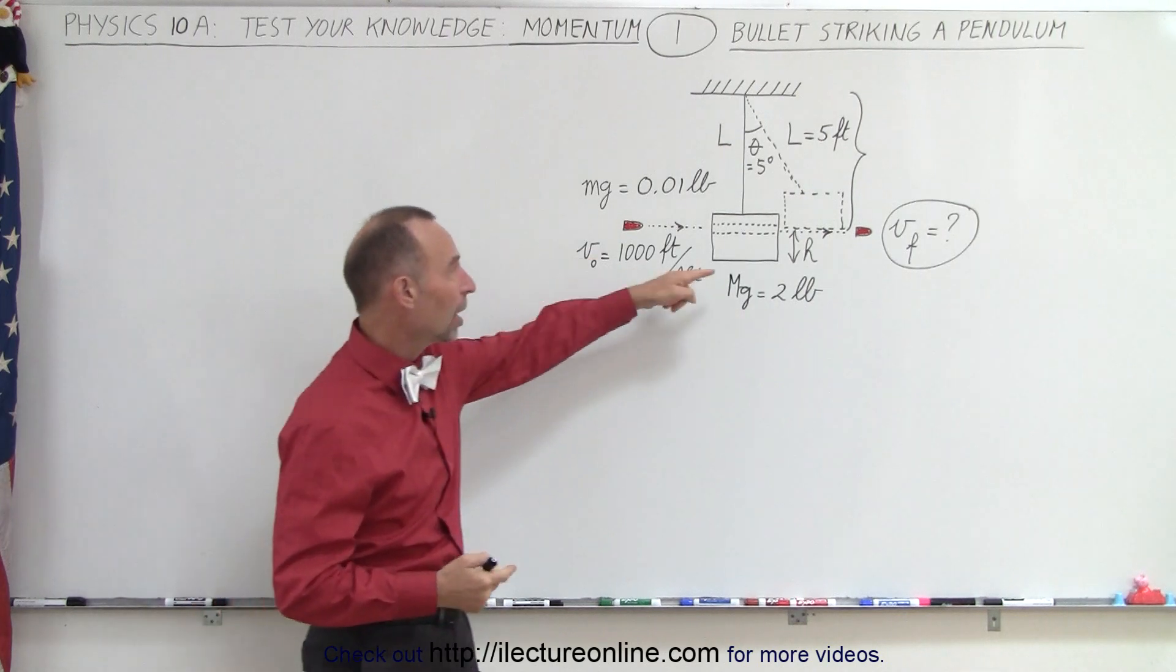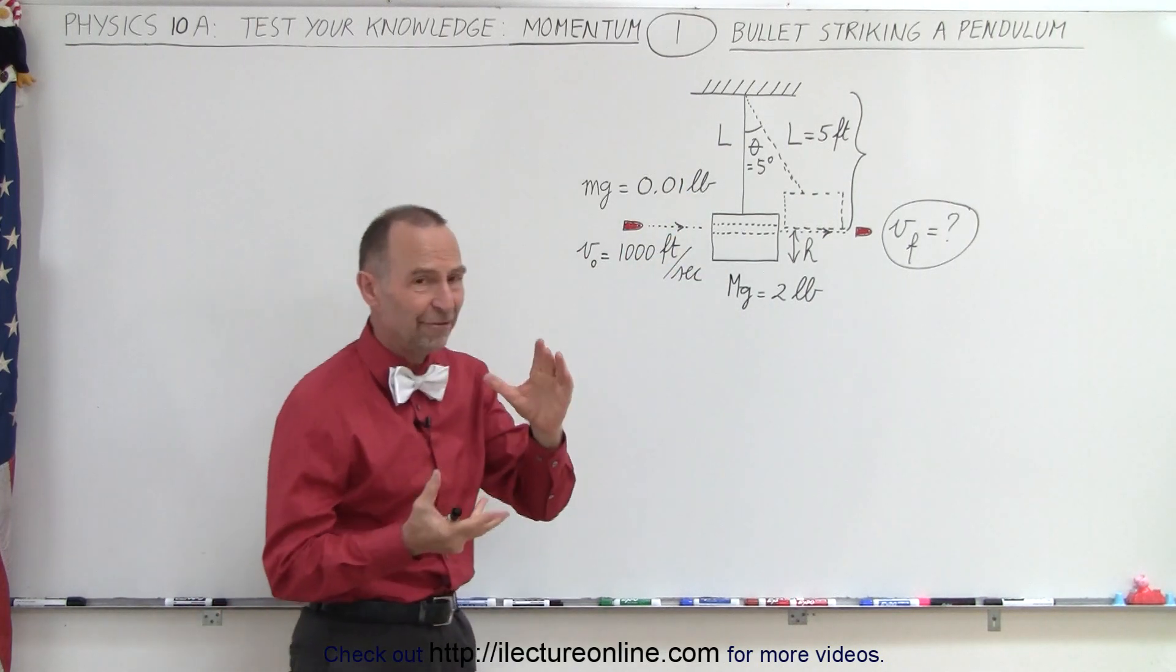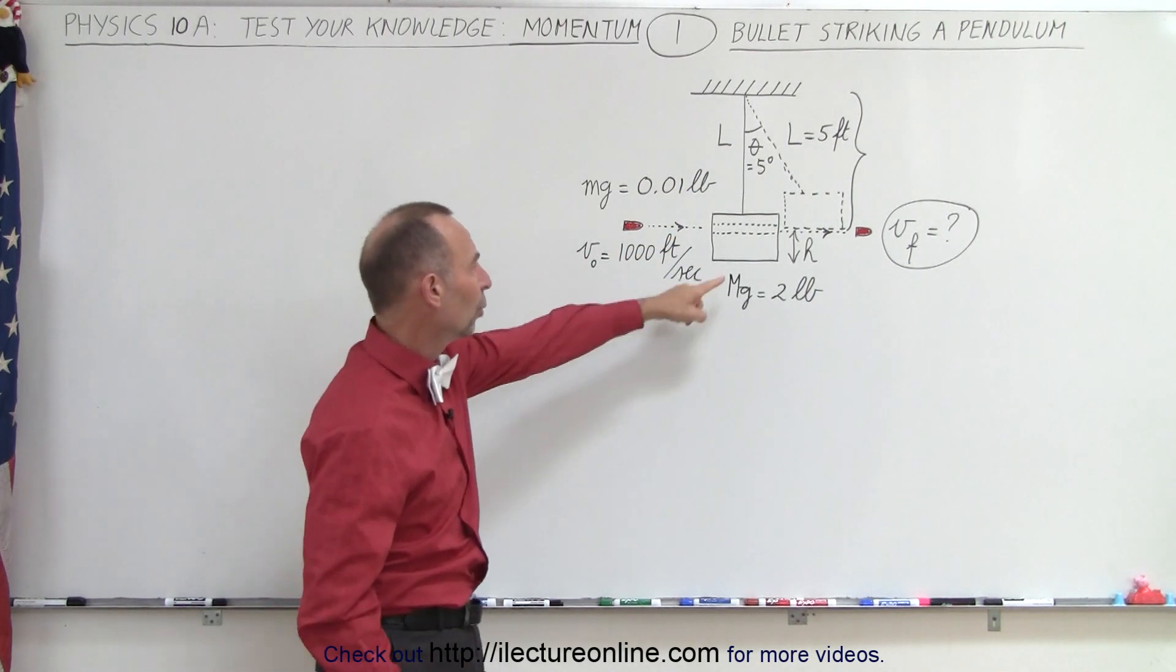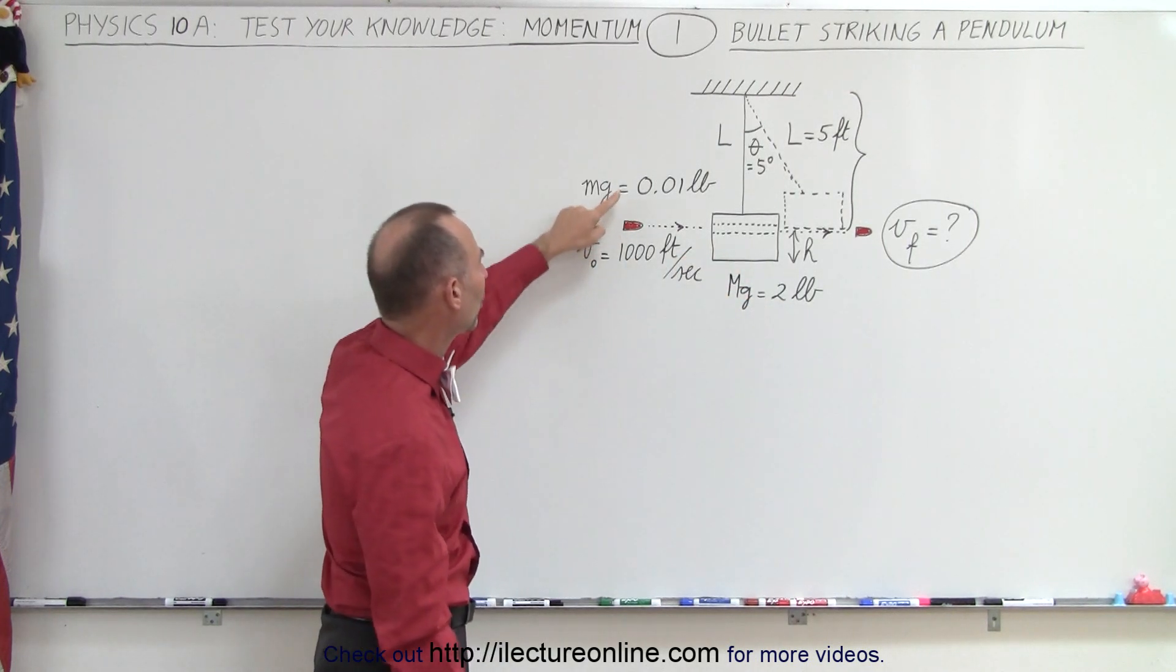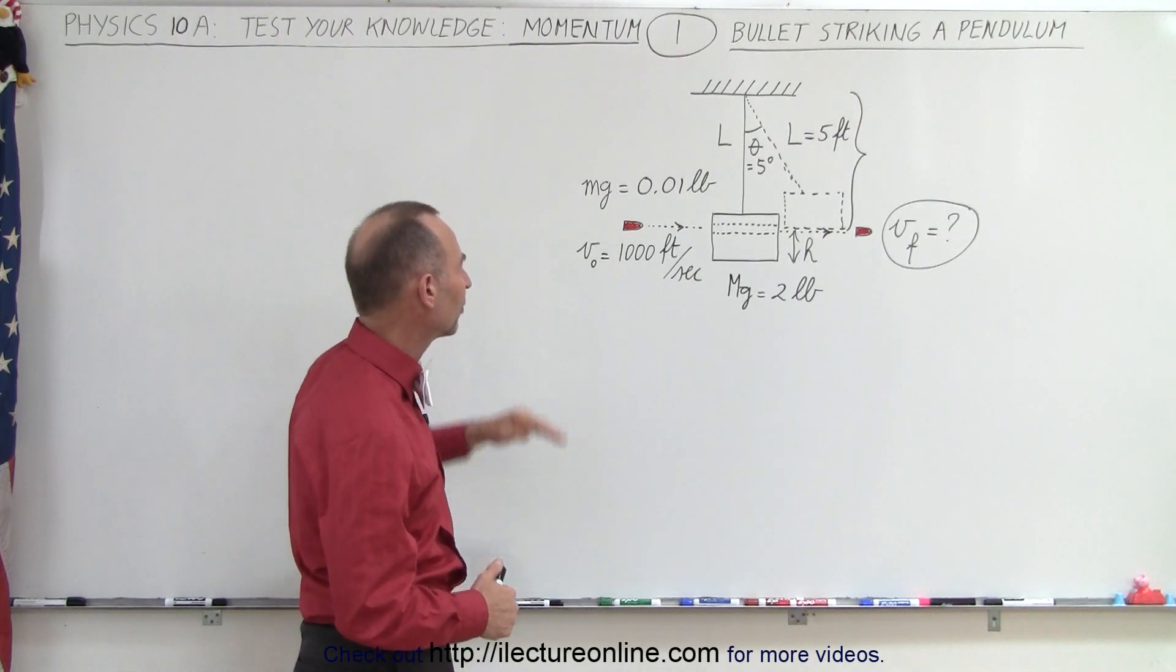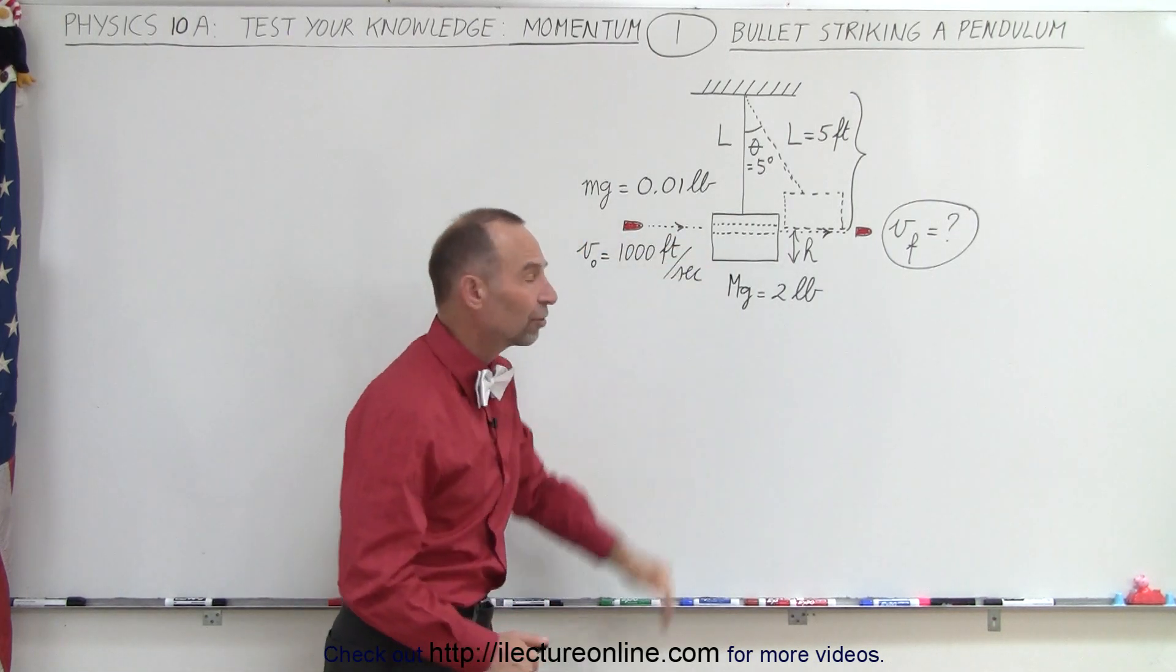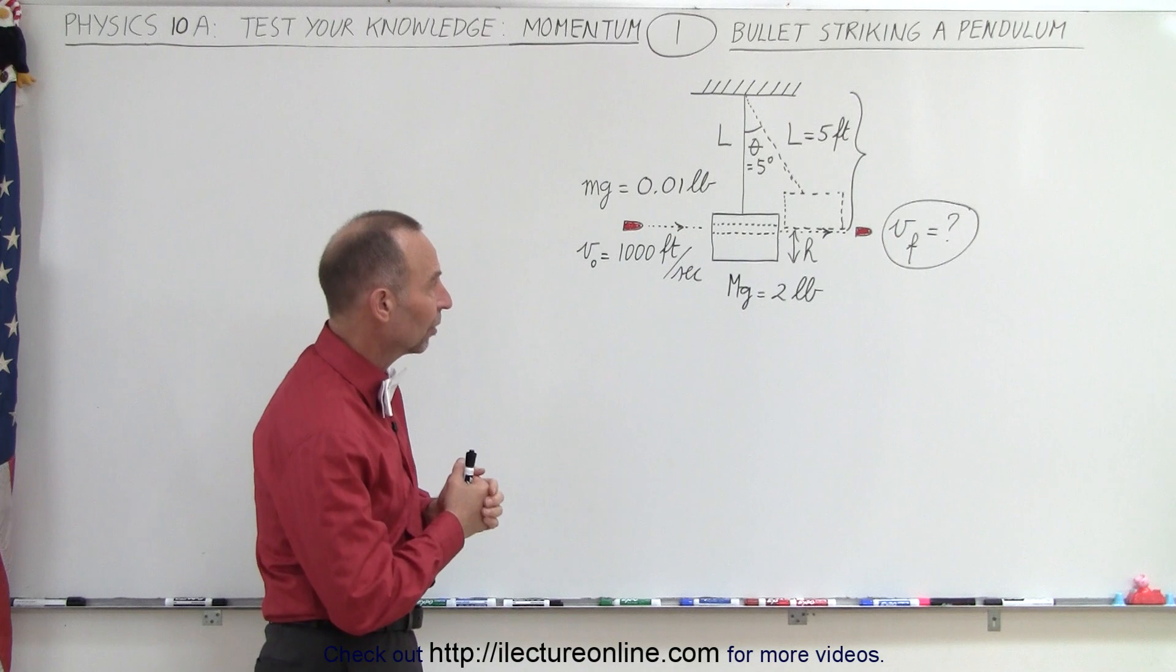A five foot long string, the weight of the block is two pounds, the weight of the bullet is 0.01 pounds, and the bullet has an initial velocity of 1000 feet per second.